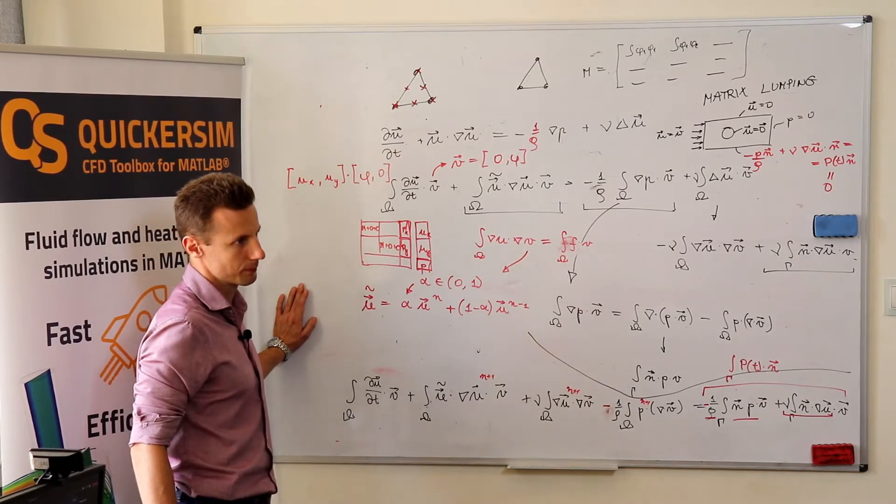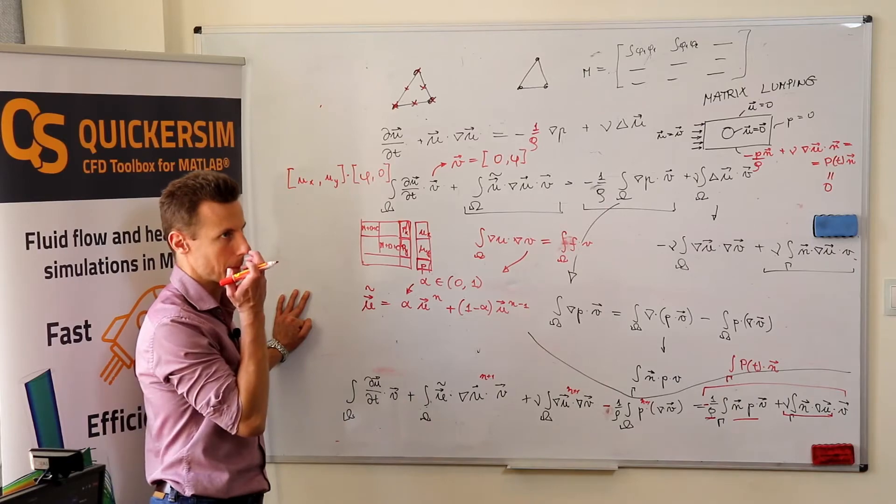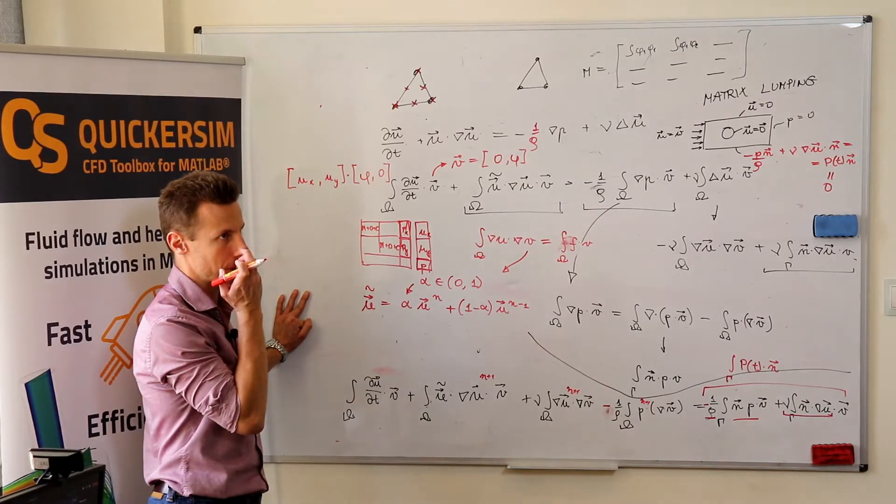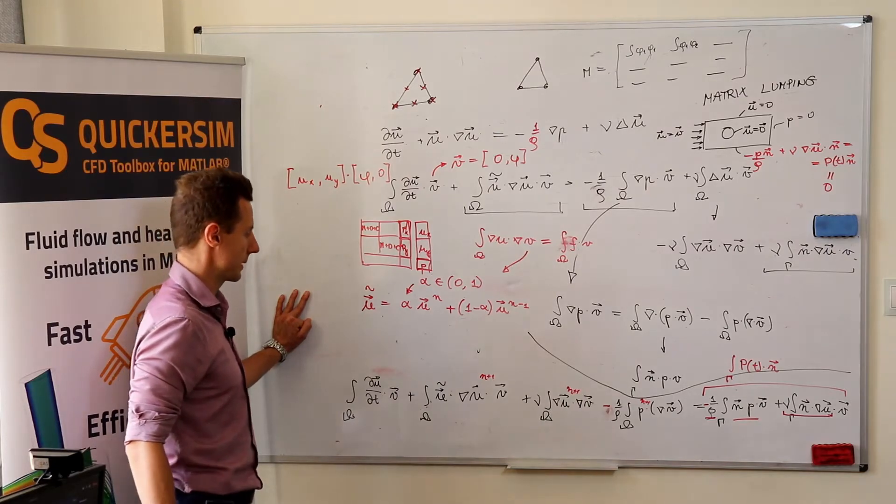Like, do we assume that we have some sub-iterations? We could. Okay. So, if we have some iteration, we can take maybe like half of value from previous time step and half from the new previous iteration. Okay. Okay. That's one of the possibilities.